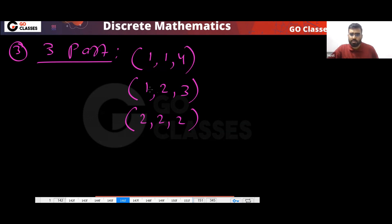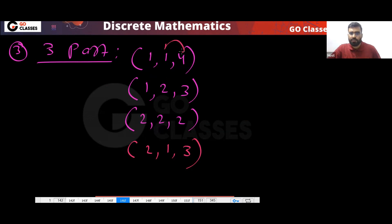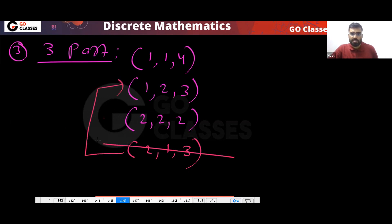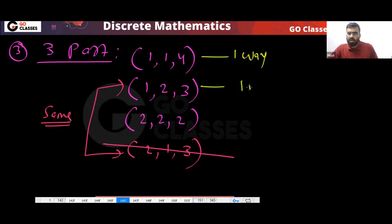For 1,2,3: if you give one here it gives 1,2,3; if you give this here you get 2,1,3 — but that's the same, already counted. So only one way per case — very simple.